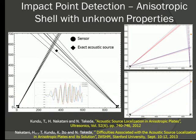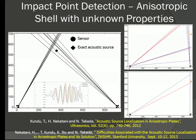We looked at the reason for the poor predictions and closely observed the received signals. Theoretically, since the sensors are very close, the signals should be identical and just slightly time-shifted. But in practice they are almost identical near the beginning, and afterwards — because of reflections from different modes and boundaries — they no longer remain identical. So instead of using the entire signal, we looked at just the beginning part of the signal, and the predictions improved quite a bit.